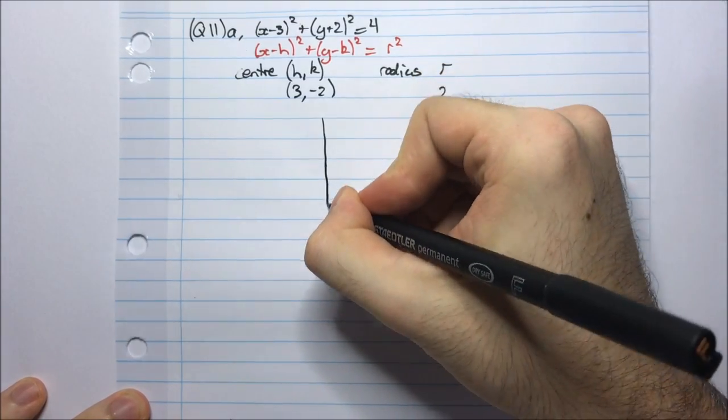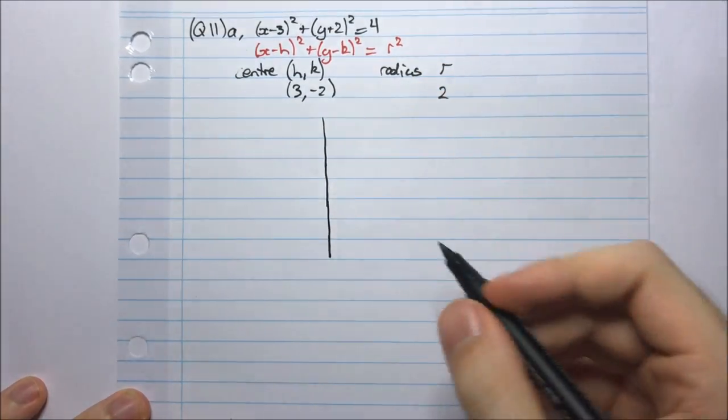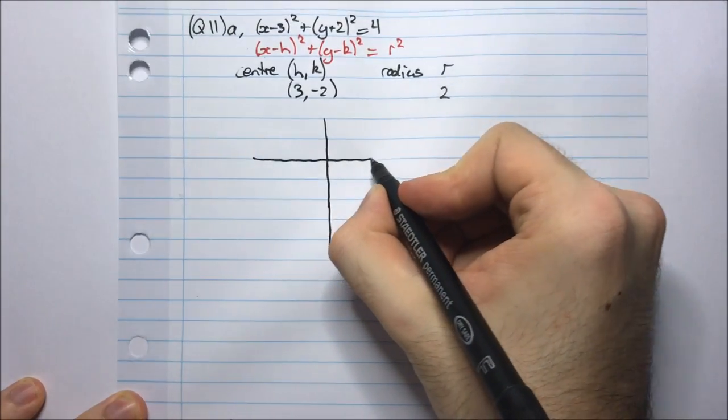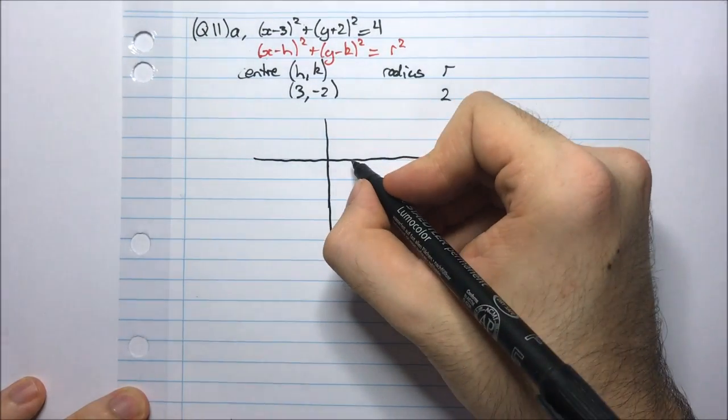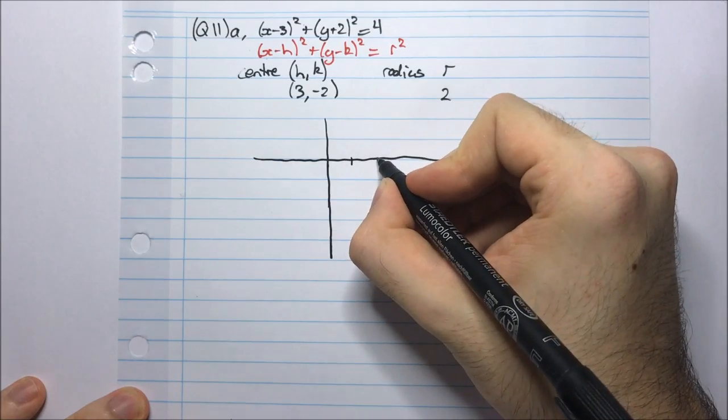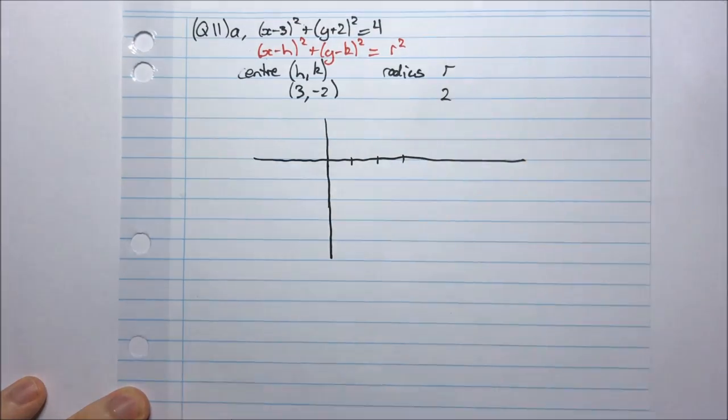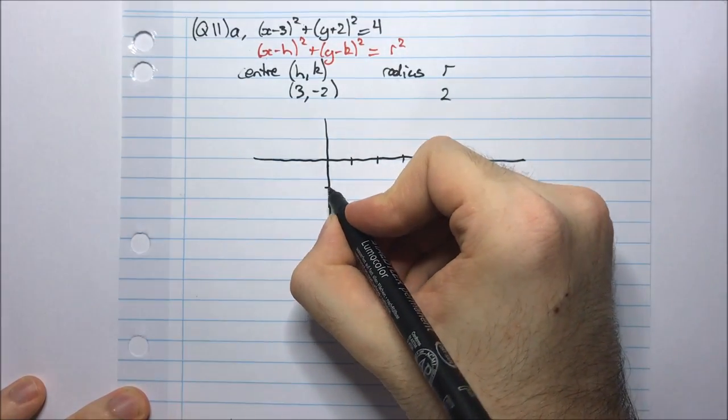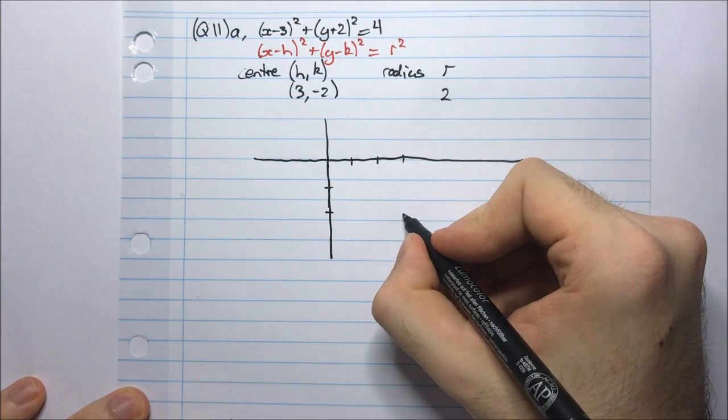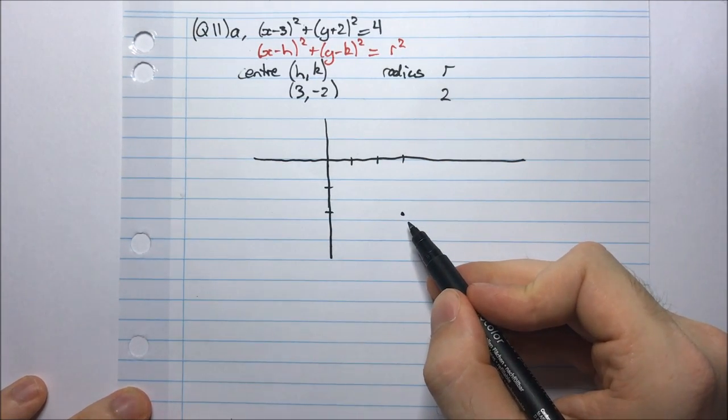Hopefully if you were doing an exam your diagram would be much neater than mine is going to be. Now we go across 3: 1, 2, 3 and we go down to 1, 2. So there that's 3, -2.